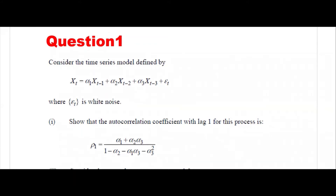Remember, in whatever problems we have solved so far, you had the values of alpha 1, alpha 2, alpha 3, so it was easier to solve. Now that alpha 1, alpha 2, alpha 3 are not given, you have to solve it. This is a general kind of solution.